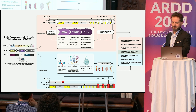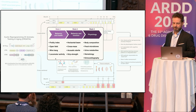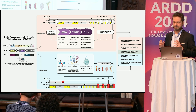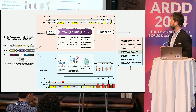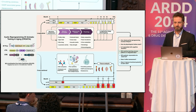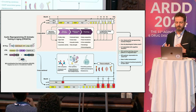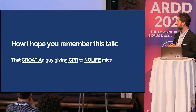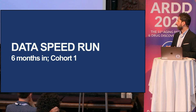The experimental design is called CROATIA—Cyclic Reprogramming of Animals Testing In Aging. It has a longitudinal and a cross-sectional arm; I will show data from the longitudinal arm. At four months, we perform a baseline assessment covering behavior, cognition, body composition, blood, and cardiology. We then expose animals to a lifelong robust cyclic protocol and repeat these measures every three to six months—longitudinal deep phenotyping. The cross-sectional arm collects tissues at various time points to detect molecular changes. The study will answer whether CPR extends lifespan and, if so, the molecular mechanisms behind that. The mnemonic: a Croatian guy giving CPR to NOLIFE mice.